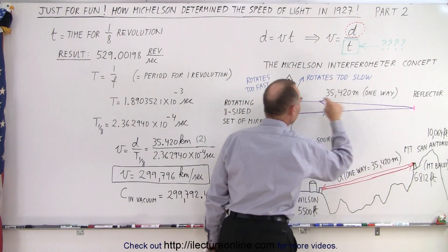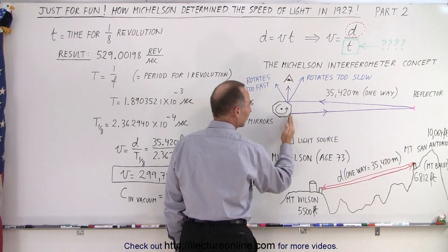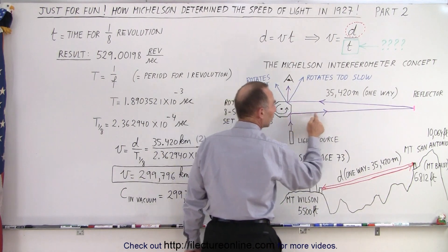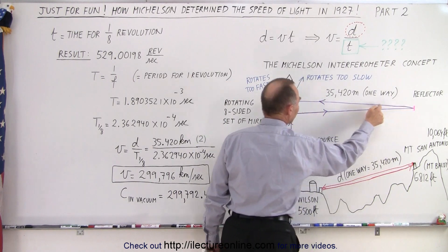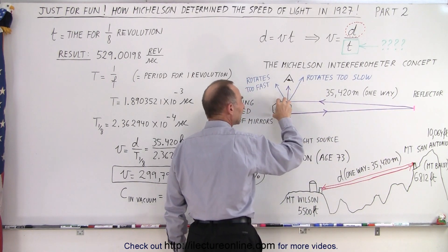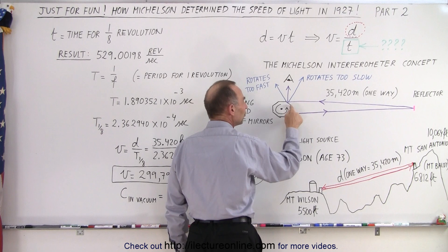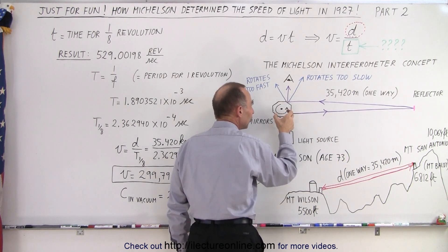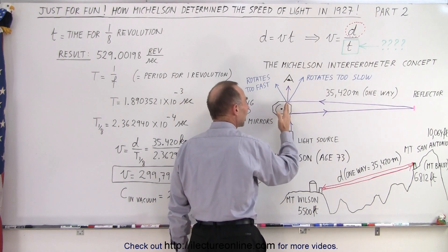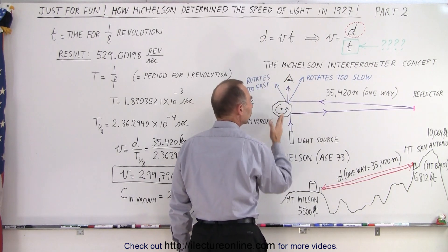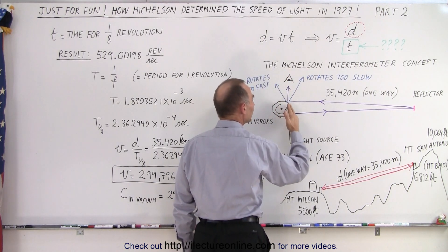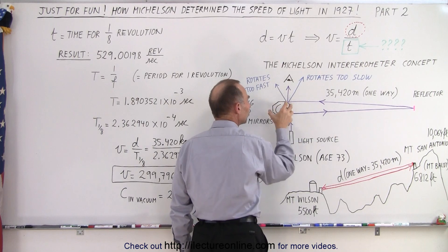then the light would go like this, hit off this mirror, reflect off the reflector, come back this way, and by the time the light gets back, this mirror would have moved into this position just perfectly if the speed was just right, so that the light would reflect straight to the observer. Too slow, the light would go like this. If it moved too fast, the light would go like this.